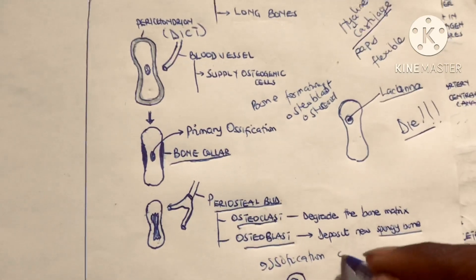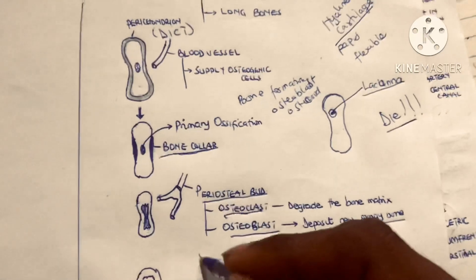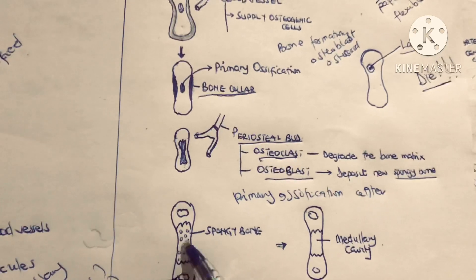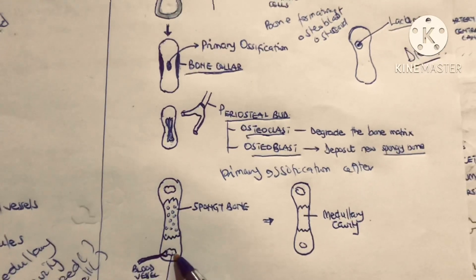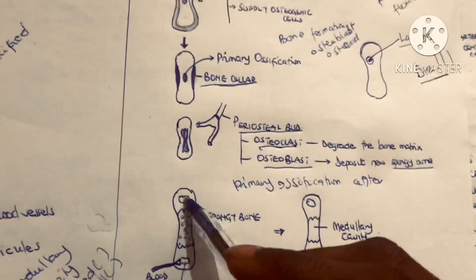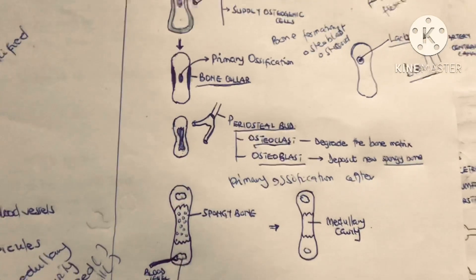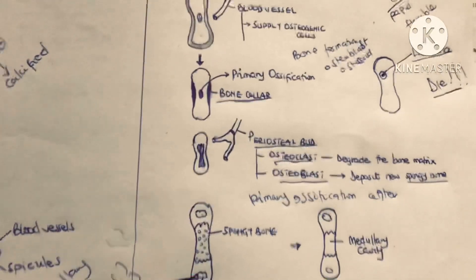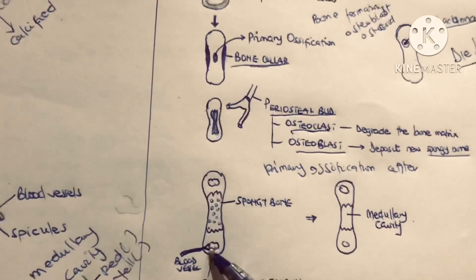The first ossification center formed is called the primary ossification center. After the diaphysis of the long bone is filled with spongy bone, secondary ossification centers form at the epiphysis sites. Blood vessels supply these areas with osteogenic cells, which leads to the formation of bony tissue — specifically spongy bone — at the epiphysis as well.